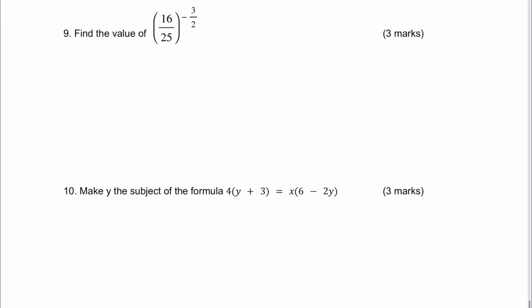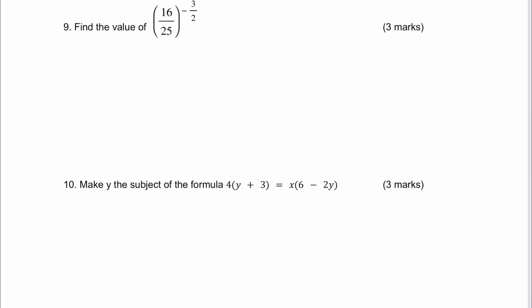Next one is question number 9. This is a negative index. If it's a negative index, it basically means the reciprocal. So I'm going to write that as 25 over 16. You'll notice it's to the power of 3 over 2, which is exactly the same as saying to the power of a half and then cubed. With 25 over 16, it means the square root of 25 and the square root of 16. So inside the square brackets, I can write that as 5 over 4, and then that's going to be cubed, which is going to give me 125 over 64.